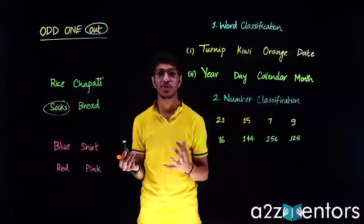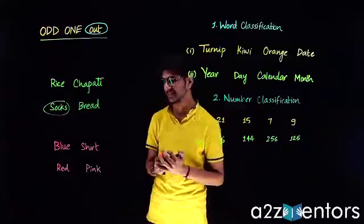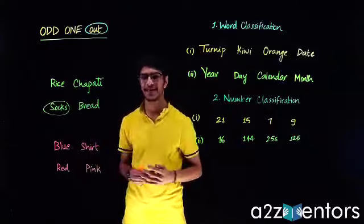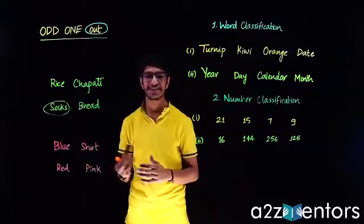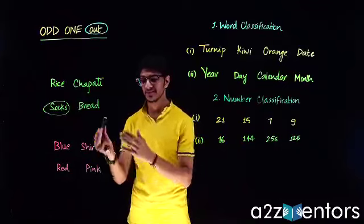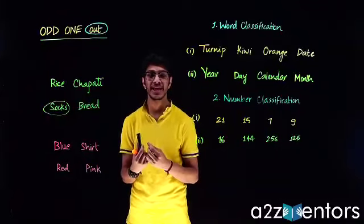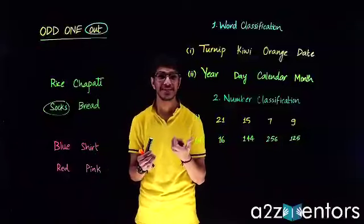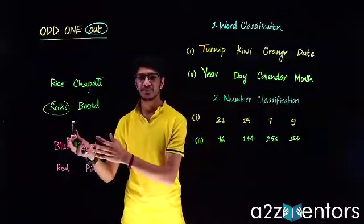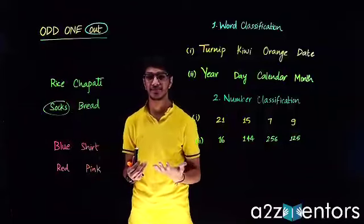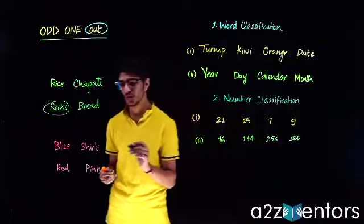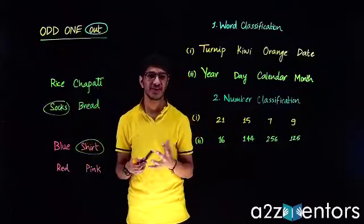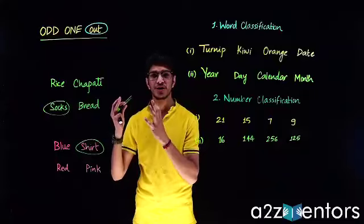In a similar way, we have another example: blue, shirt, red, pink. Blue, red, and pink are colors, but shirt is something that we wear. So shirt is not following the common property — the common property here is color. Blue, red, and pink are all colors, so 'shirt' is the odd one out.